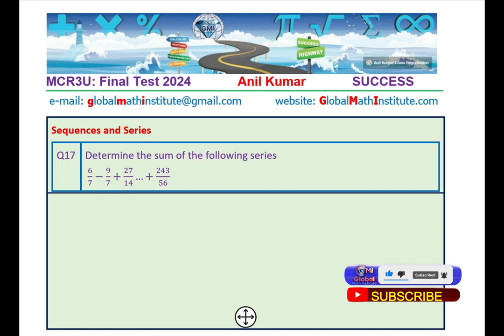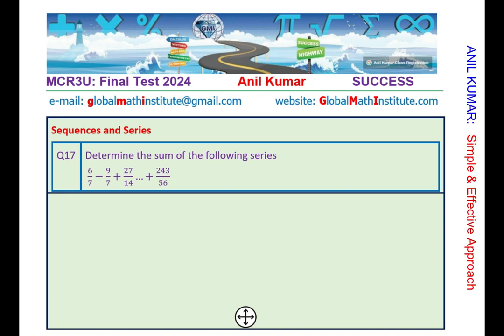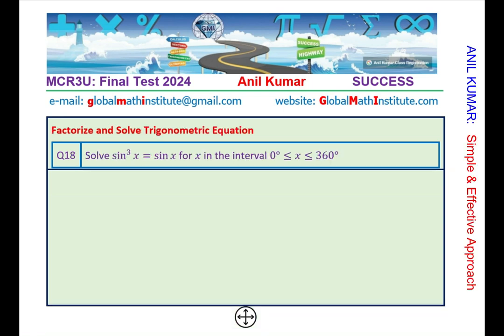We are almost at the end. Last two chapters, sequences and series and then financial applications. Question number 18 here is from trigonometry. Solve sin³x = sin x for x in the interval of 0 to 360 degrees. Factor, bring the terms to one side and solve.